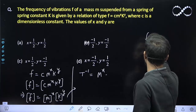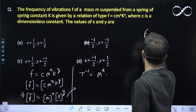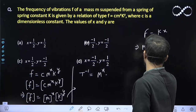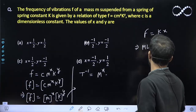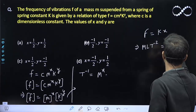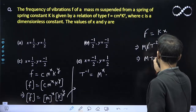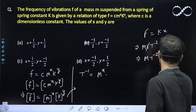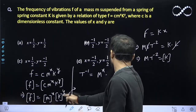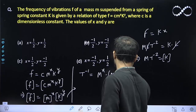Force is equal to k times x. So the dimension of force is M·L·T raised to power minus 2, and that equals k times x where x is the distance, which has dimension L. So the L cancels out, and from here the dimension of k is M·T raised to power minus 2. Substituting this, k raised to power y gives dimension M·T raised to power minus 2, all raised to power y.